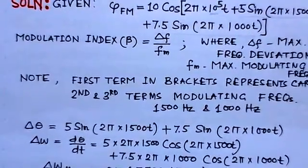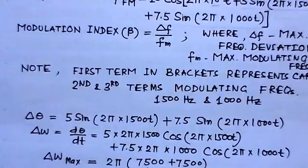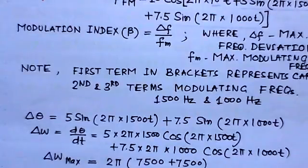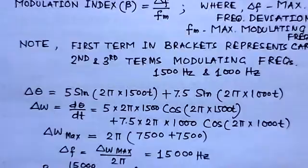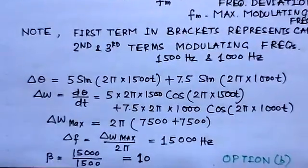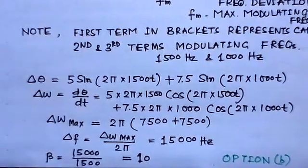To find the maximum deviation, we find delta omega maximum. Setting the cosine terms to 1, the first term gives 5 × 2π × 1500 = 2π × 7500 and the second term also gives 2π × 7500. So delta f = delta omega maximum / 2π = 1500 Hz. The maximum frequency deviation is 1500 Hz.